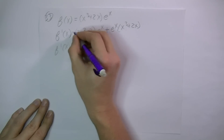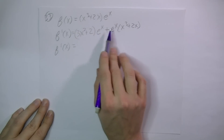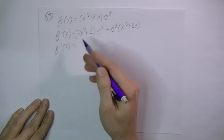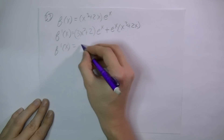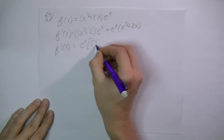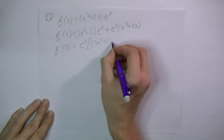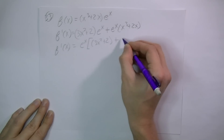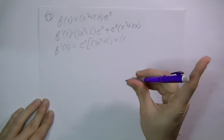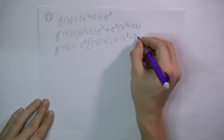Then we add, and we take the derivative of the second function. The derivative of e to the x is e to the x, and we multiply by the first function, x cubed plus 2x. We see that e to the x is in each term, and we can factor that out. So we get e to the x times quantity 3x squared plus 2 plus x cubed plus 2x.